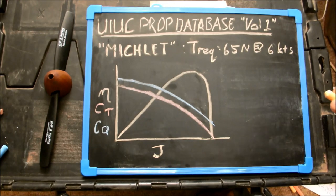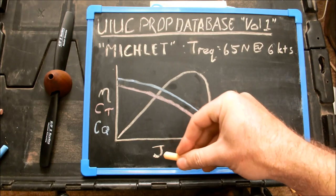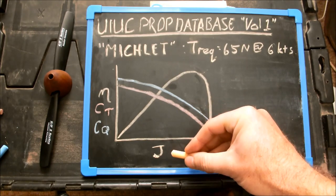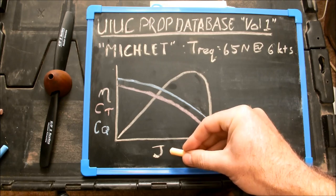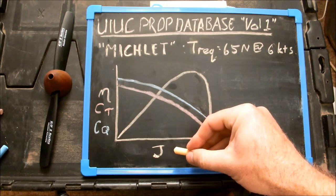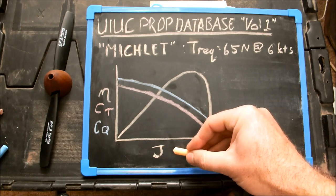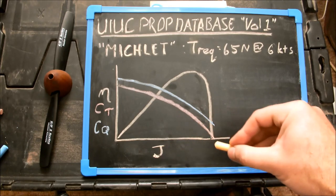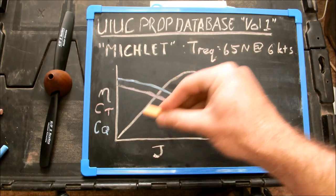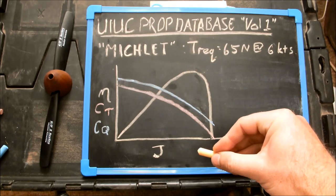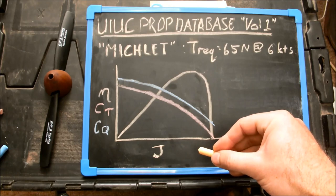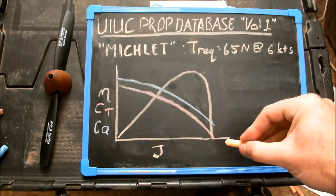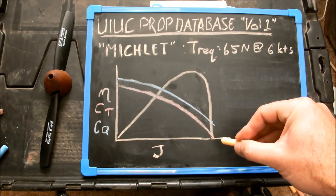This is what the curves look like if I plot the wind tunnel test data against advance ratio. Now advance ratio is not a very intuitive variable to work with. It's a function of boat speed, propeller speed and propeller diameter. So the easiest way to make this more intuitive is to assume that your propeller RPM is constant. Obviously your diameter is fixed. And then this X axis simply becomes your boat speed axis.